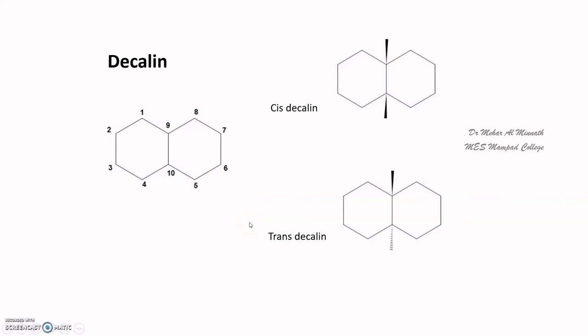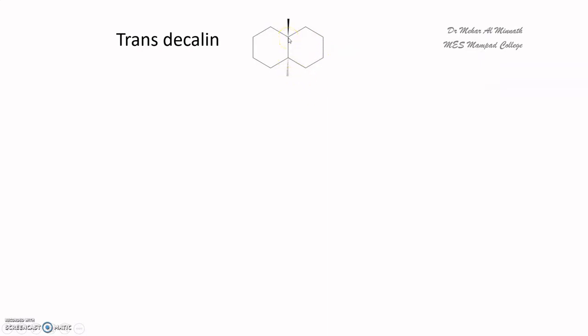Let us do a conformational analysis of the two types of decalins — cis-decalin and trans-decalin — starting with trans-decalin. Decalin can be viewed as a 1,2-disubstituted cyclohexane, where one ring is fused on carbons 1 and 2 of the first ring. In cyclohexane, a molecule is called trans when the substituents are in alpha and beta orientation — one oriented above the plane (beta) and the other below the plane (alpha).